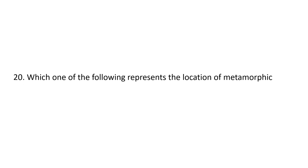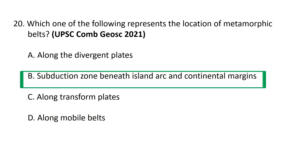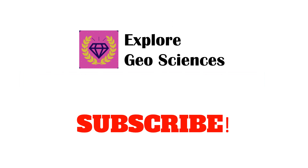Question 20: Which one of the following represents the location of metamorphic belts? (a) Along divergent plates, (b) subduction zone beneath island arc and continental margins, (c) along transform plates, or (d) along the mobile belts. Metamorphic belts are located along the subduction zone beneath island arcs and continental margins, so B is the correct option. Hope you have learned some important points from this exam paper on the Combined Geoscientist Exam. See you in the next video, thank you.